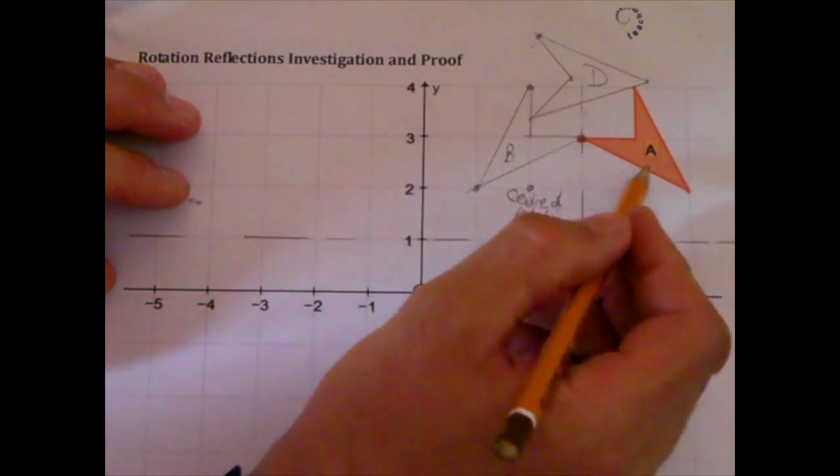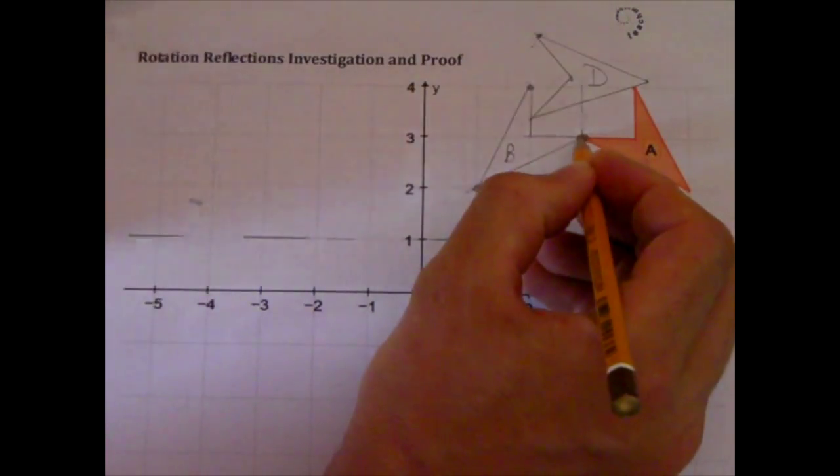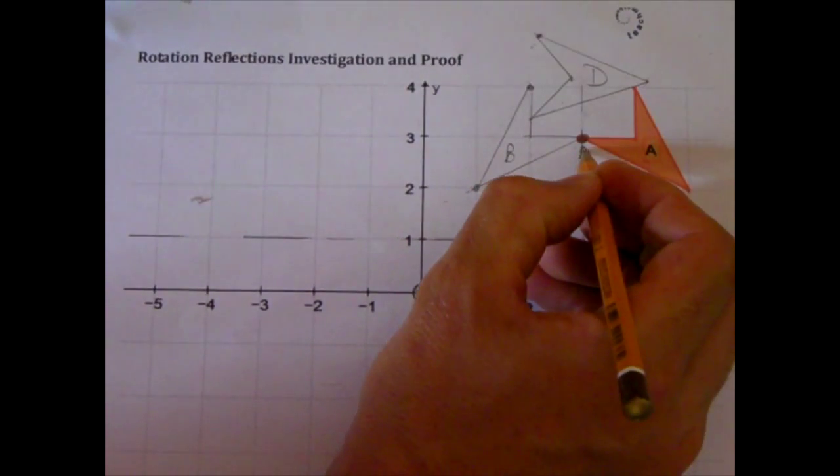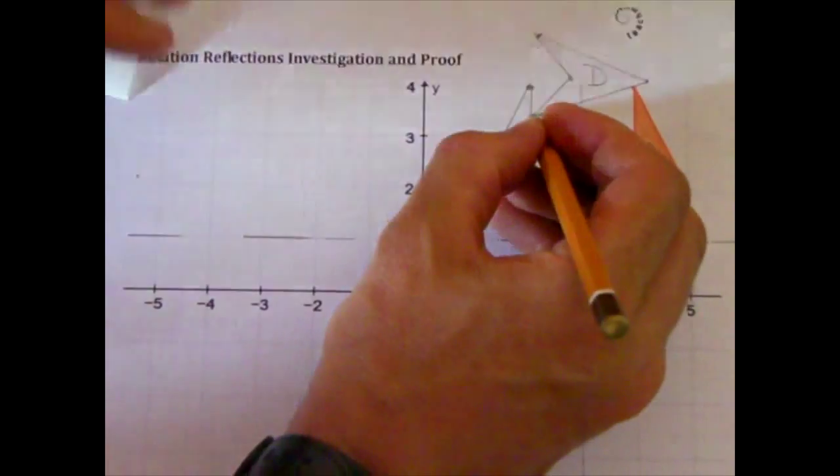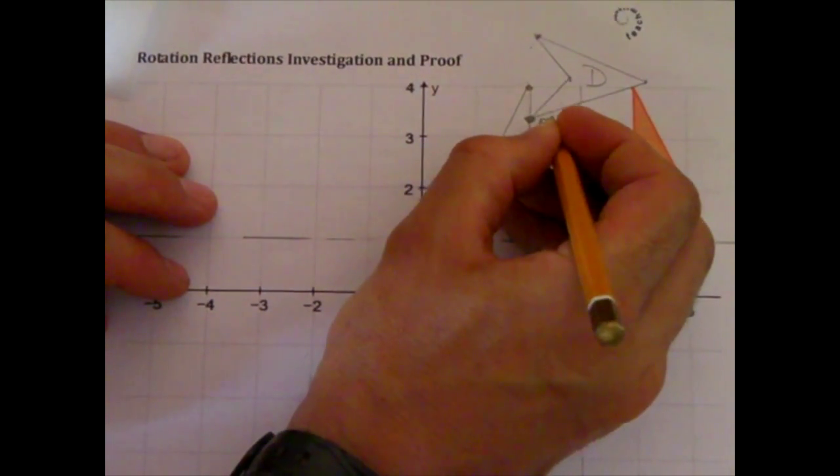How would I work out what the angle of rotation is there? Well, this point here, let's call that point P, is the same as the center of rotation to this point on that rotated shape. So I'm going to call that P dash.